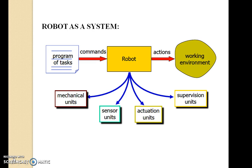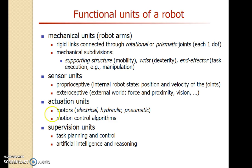Now consider a robot as a system. A robot consists of different parts like mechanical units, sensor units, actuation units, and supervision units. The intelligence of the robot depends upon the program of the microcontroller — that is, the program of tasks — which is the command given to the robot, and the robot will work in a working environment.